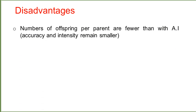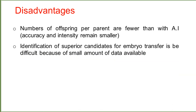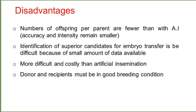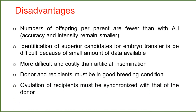However, these technologies also have limitations. The number of offspring per parent is fewer than with artificial insemination, meaning the accuracy and intensity remain smaller. Identification of superior candidates for embryo transfer is difficult because of the small amount of data available. It is more difficult and costly than artificial insemination. Donor and recipient must be in good breeding condition. Ovulation of recipients must be synchronized with that of the donor, and success rates are highly variable.